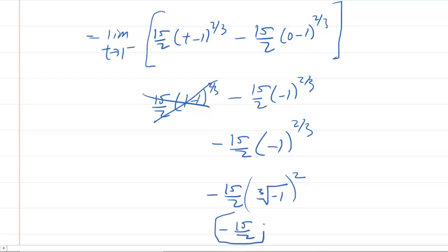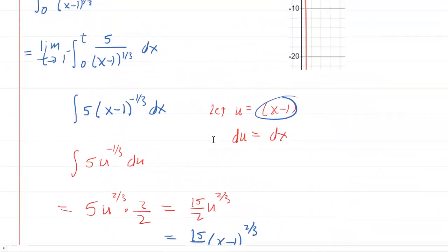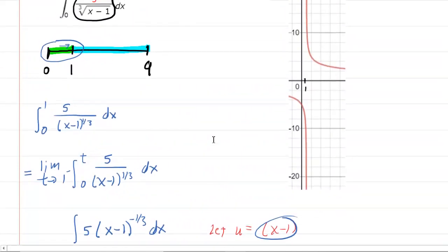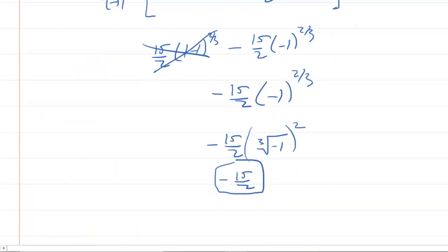So that first integral actually is convergent. And now we're going to explore the second integral. It's basically the same process, except now our bounds will change from 1 to 9. So we'll come down here. We'll evaluate that second integral. We're going to go from 1 to 9 of our original 5 over the cube root of x minus 1 dx.